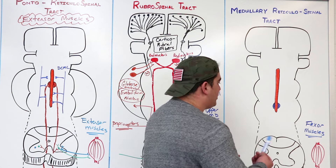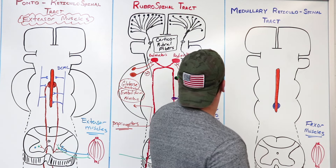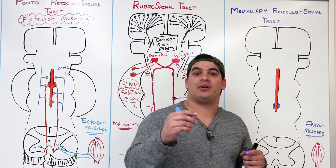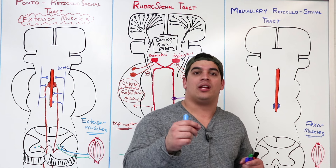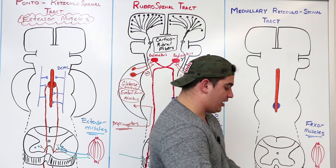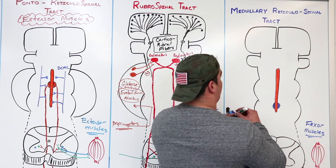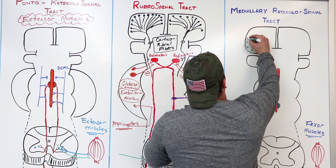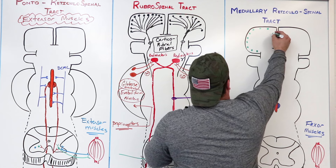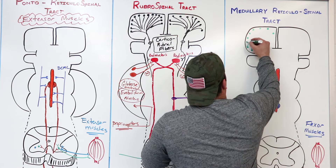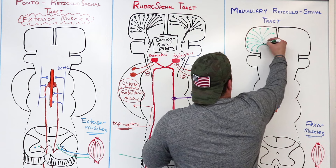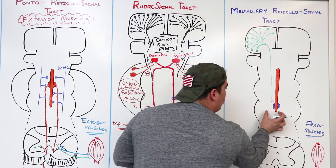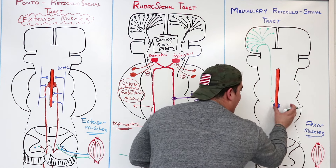How do we stimulate this system? The pontoreticulospinal didn't really have any information coming from the cerebral cortex, but the medullary reticulospinal actually does. The cerebral cortex has what's called corticoreticular fibers. These corticoreticular fibers come down and stimulate special nuclei located within the reticular formation in the medulla.